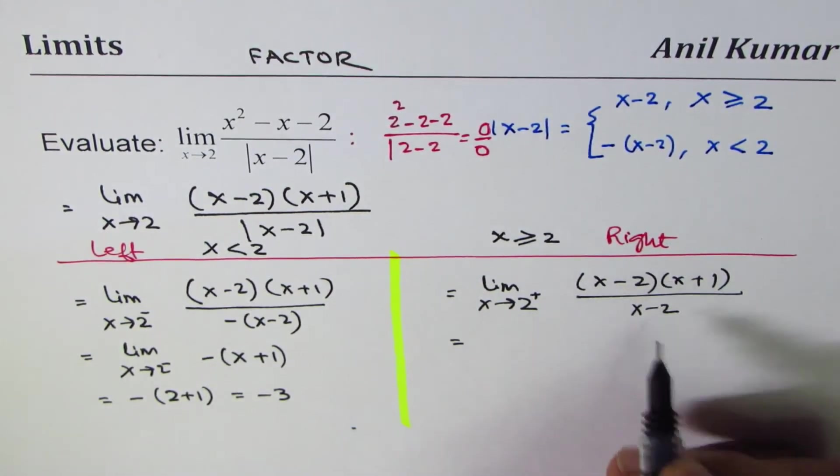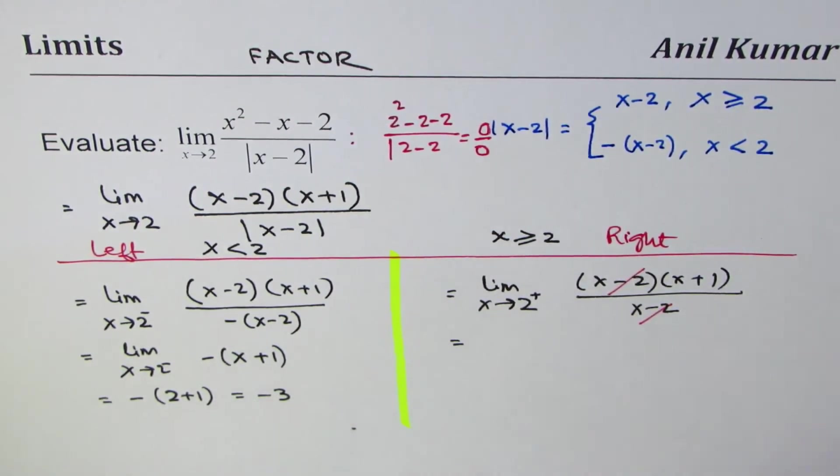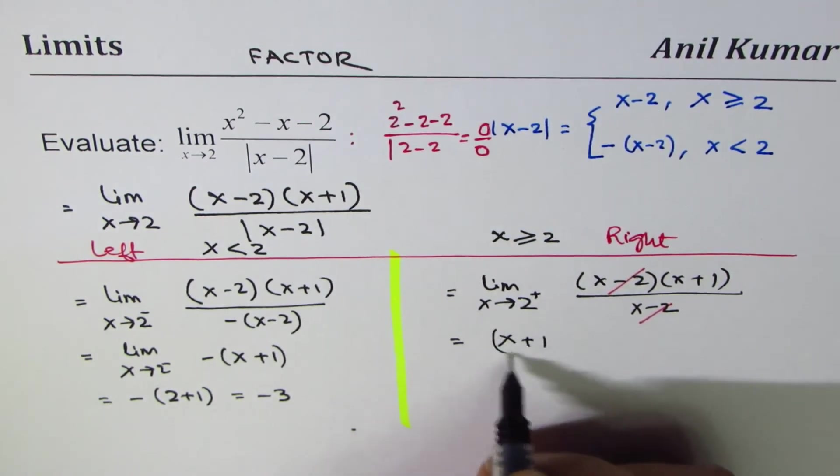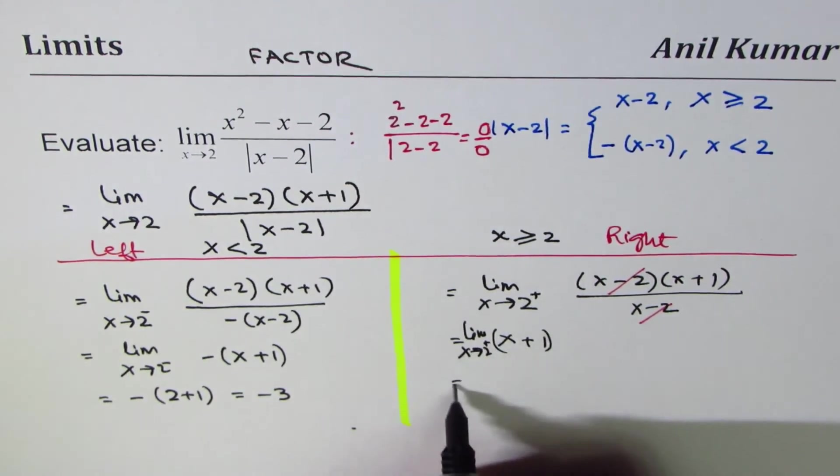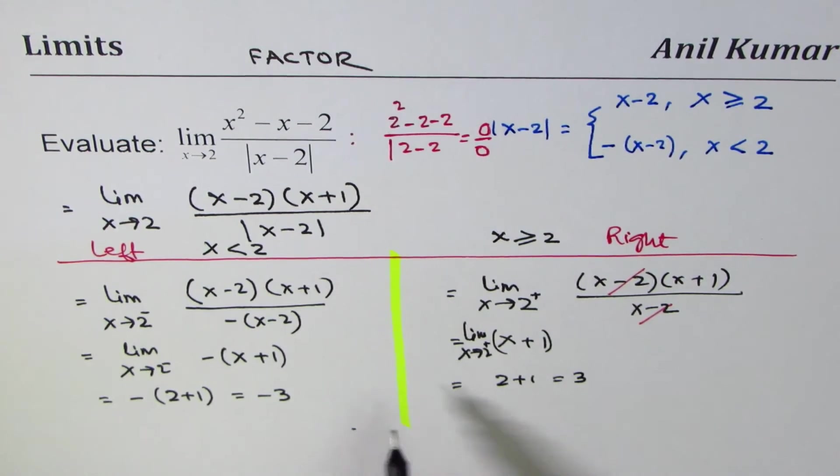On the other hand, the x minus 2 cancels out. In that case we get x plus 1, and limit x approaches 2 from the right side, if I substitute 2 here I get 2 plus 1 which is 3.